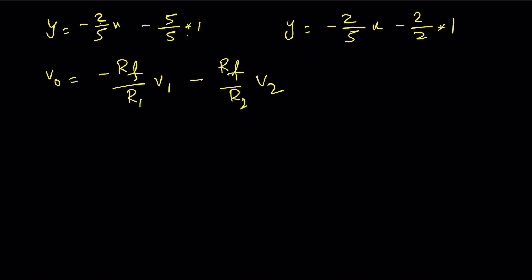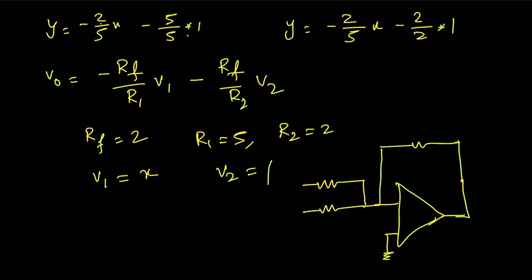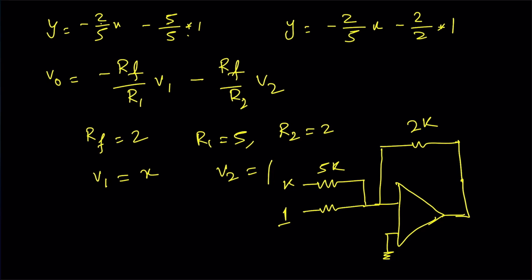Now we can set Rf = 2, R1 = 5, and R2 = 2, with V1 = x and V2 = 1. So I draw the first op-amp circuit: one input resistance R1 = 5k with input V1 = x, another input resistance R2 = 2k with input V2 = 1 volt, and feedback resistance Rf = 2k. The output of this op-amp will be y.